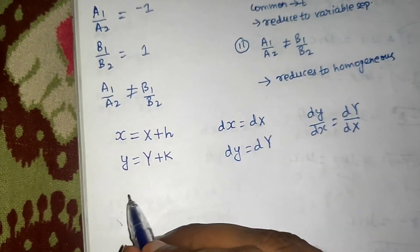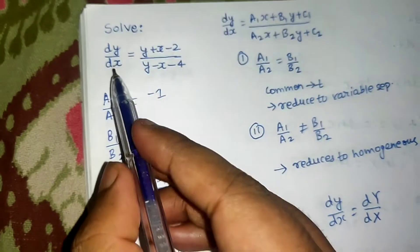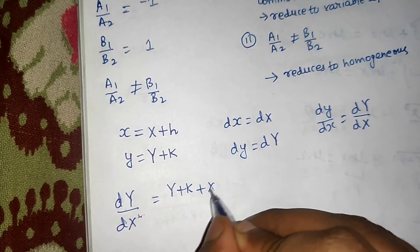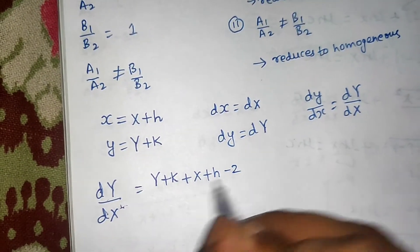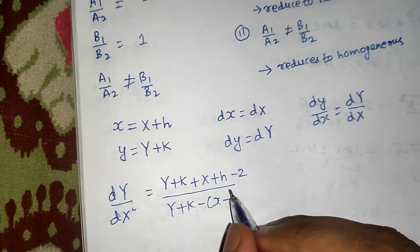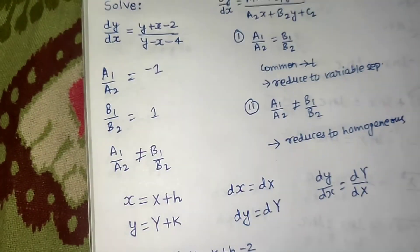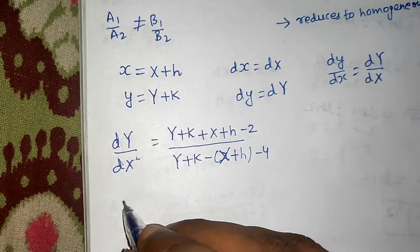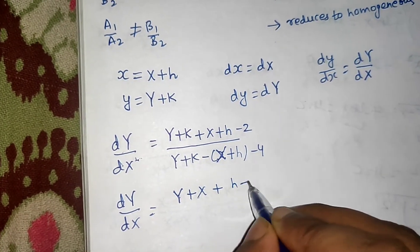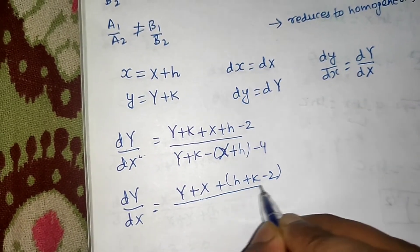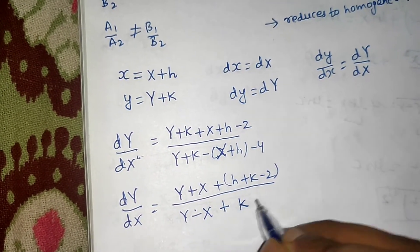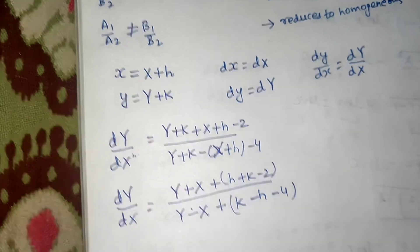Substituting back, we write dY/dX in place of dy/dx. The numerator becomes: y + x = (Y + k) + (X + h) − 2. The denominator becomes: y − x = (Y + k) − (X + h) − 4. Collecting constant terms: dY/dX = (Y + X + h + k − 2) / (Y − X + k − h − 4).